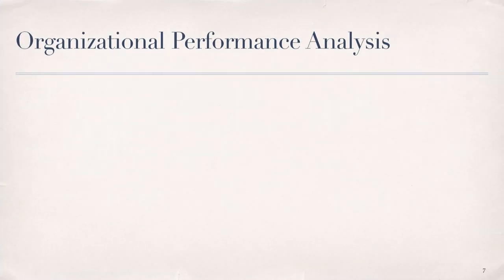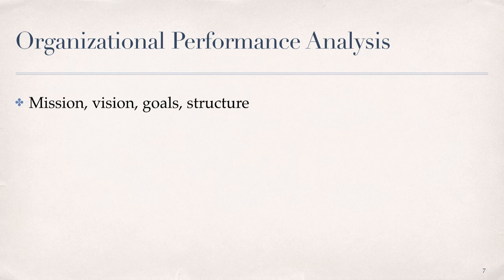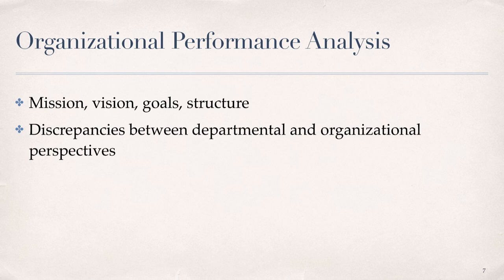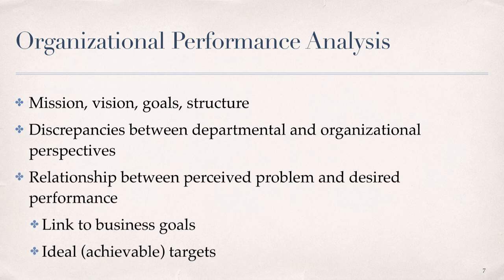So, as we begin our review for performance analysis, recall that performance analysis starts with organizational analysis to identify desired performance. We ask ourselves, what does the organizational culture look like in terms of its stated mission, vision, goals, and structure? What distinguishes the business in terms of its competitors, market share, and how the organization sees itself? It's important to look for discrepancies between the departmental and the organizational perspectives. This is particularly the case with large or globally distributed business units to ensure alignment across the different levels of management. You need to consider the relationship between a perceived problem and the desired performance. Recall from the Rumbler text that the link to business goals is critical, and there should also be a clear picture of ideal and achievable targets for desired performance.